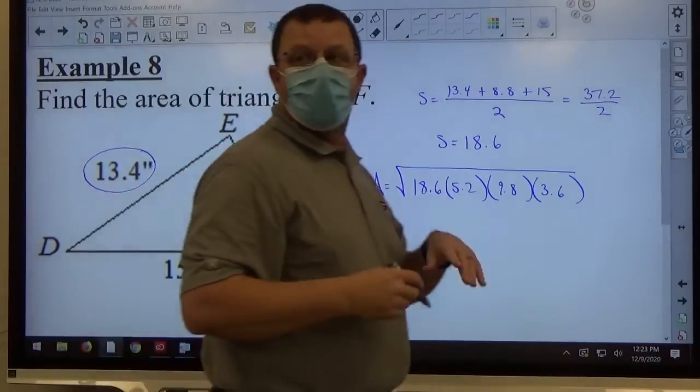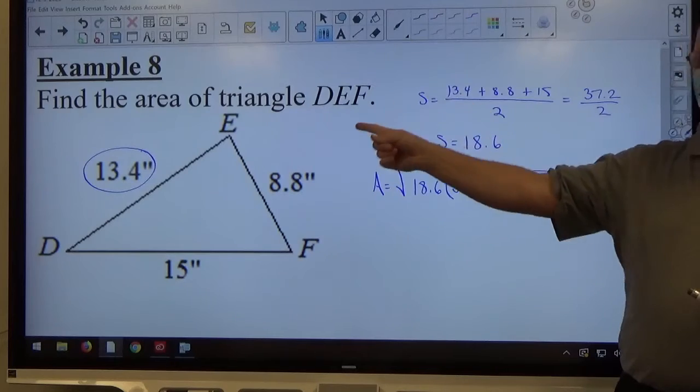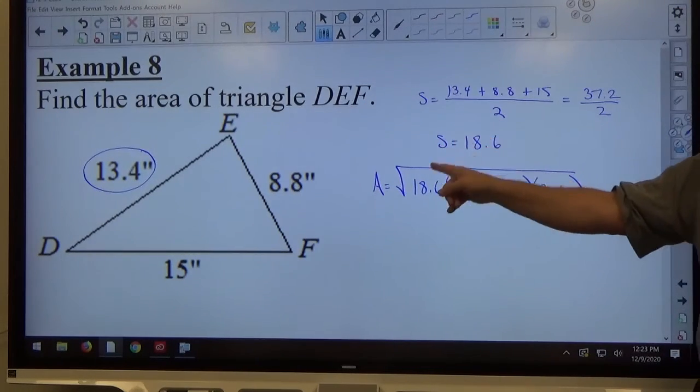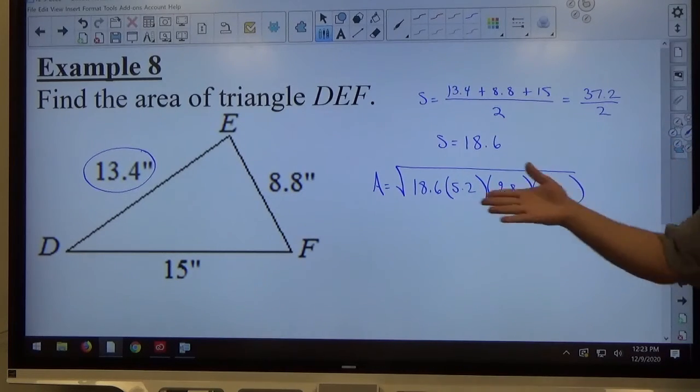Once you find out whatever S is, S is some number, it's always going to be a number bigger than all three sides. It has to be. So whatever that number is, subtract all three sides to get the other three numbers. And then once you get that set up, then it's just a matter of typing that in.